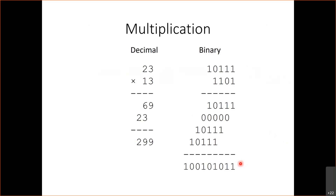We're focusing on binary arithmetic because that's what computers use. Octal and hexadecimal are used for compactness when describing numbers in textbooks or papers, not for actual computation. A computer performs arithmetic in binary — octal and hex are just more concise ways for humans to write binary values.